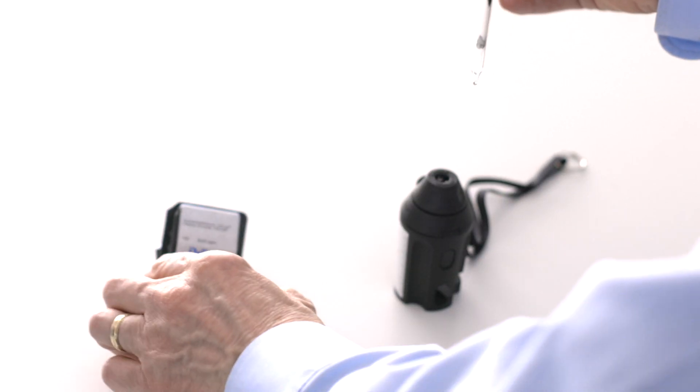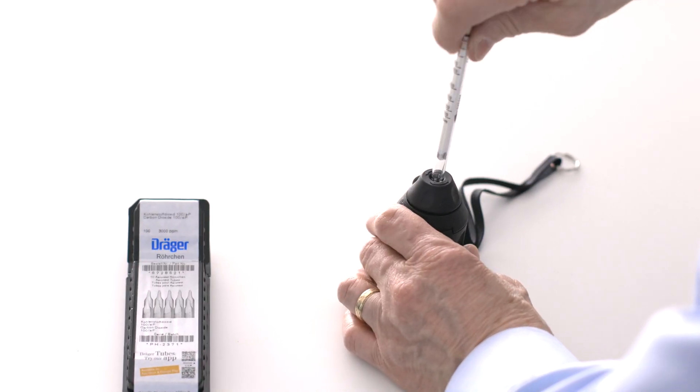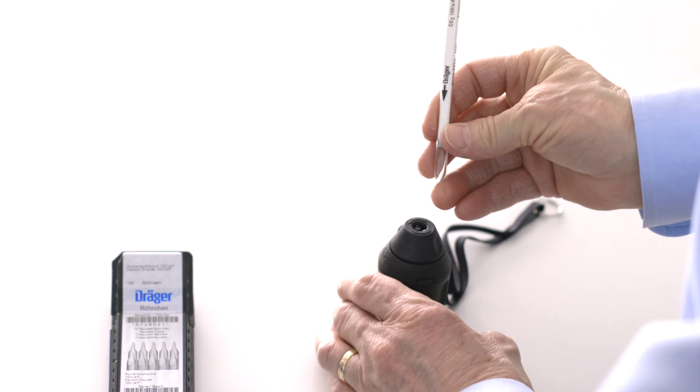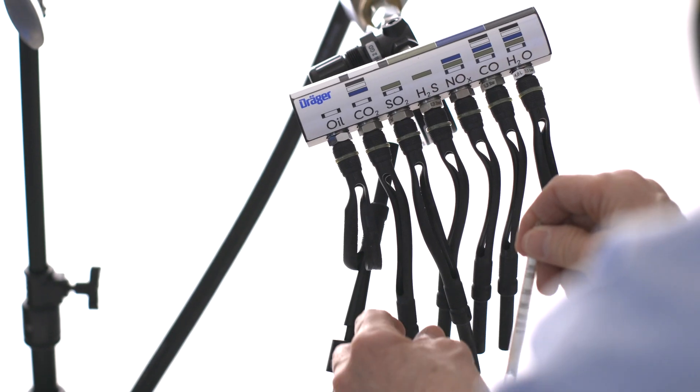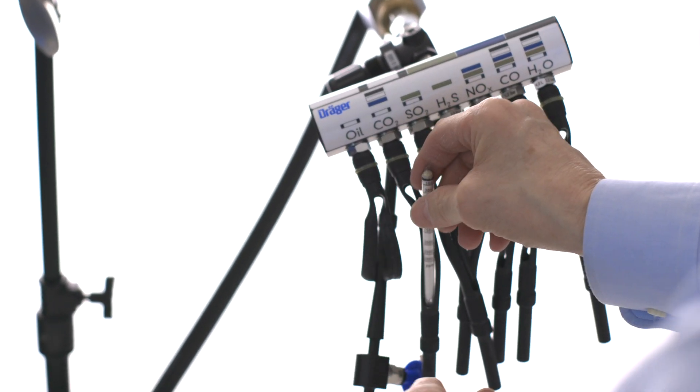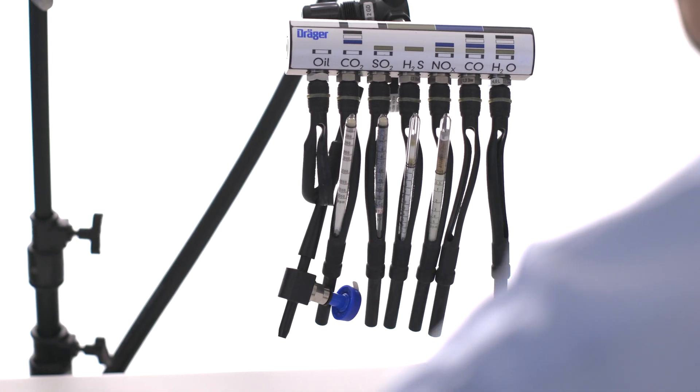Select one of the carbon dioxide tubes from the case. Score and snap off the tips using the tube opener. The arrow on the tube indicates the direction of airflow. Insert the tube into the bottom of the correct holder, leaving the top part disconnected for now. Do the same thing for the other tubes.